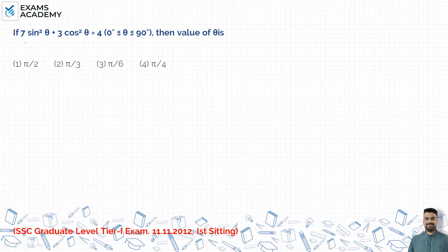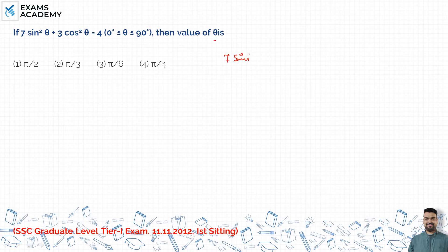Friends, a question here from trigonometry: if 7sin²θ + 3cos²θ = 4, and θ lies between 0 to 90 degrees, then the value of θ is. Given: 7sin²θ + 3cos²θ = 4.